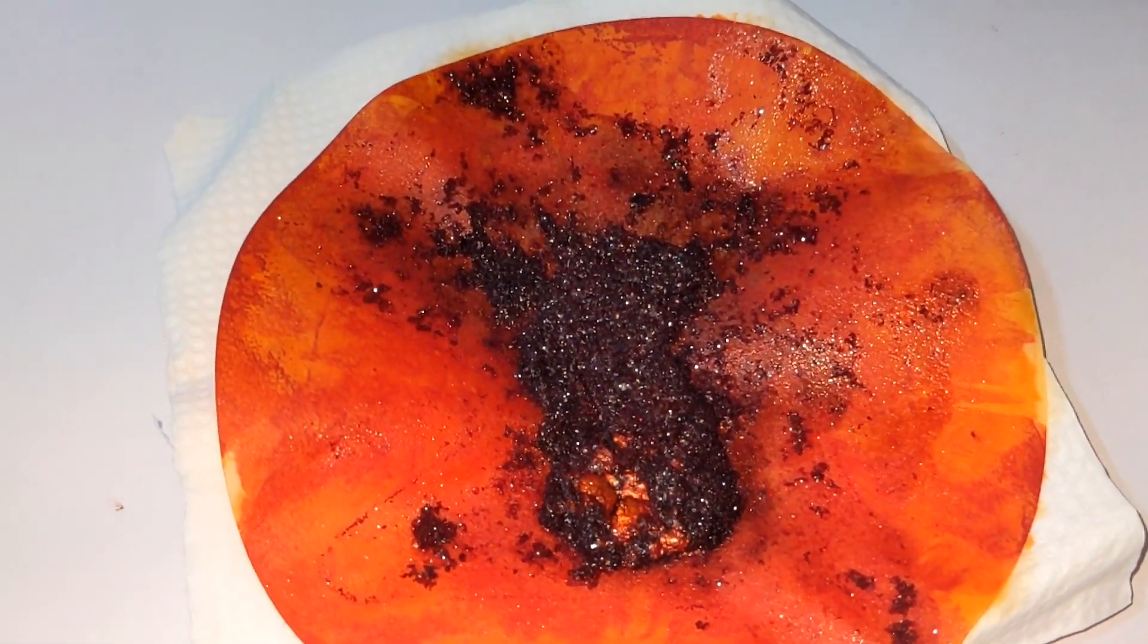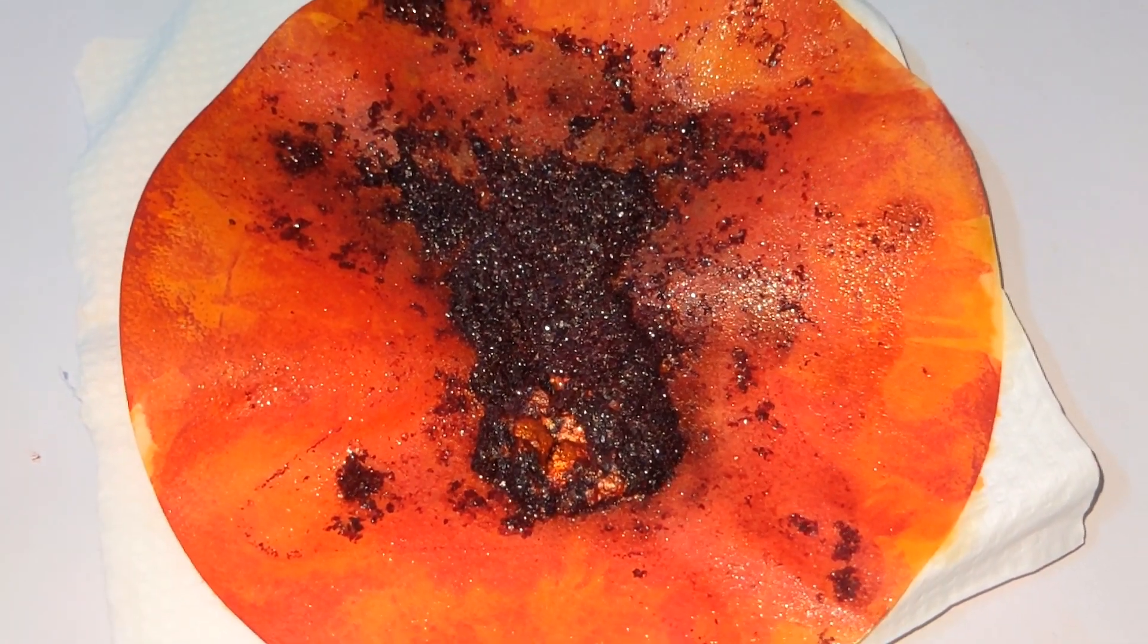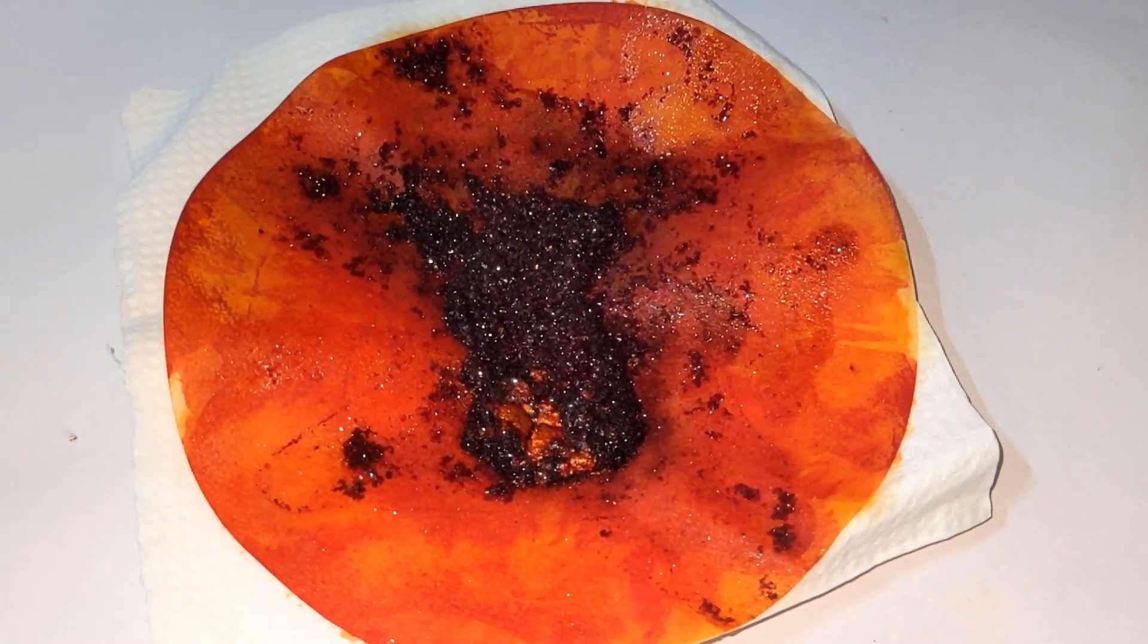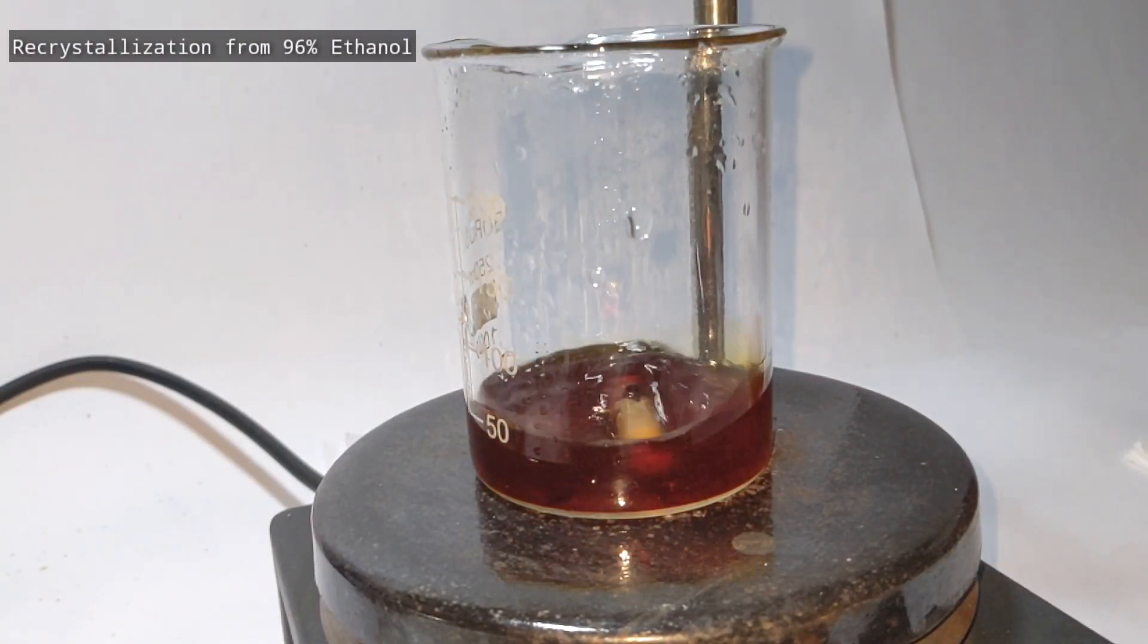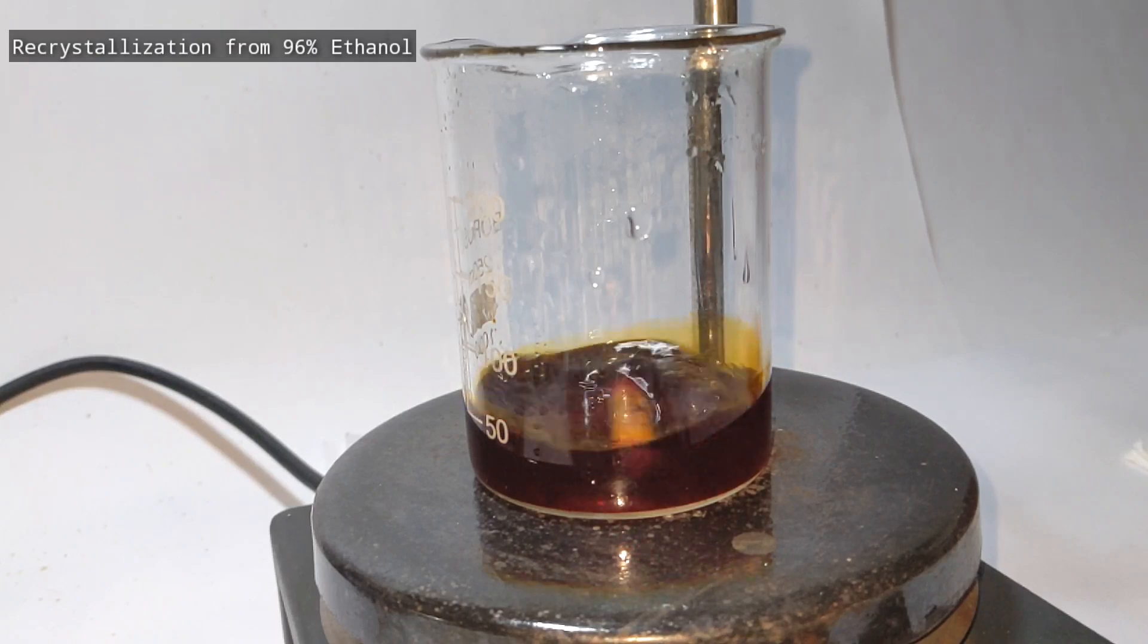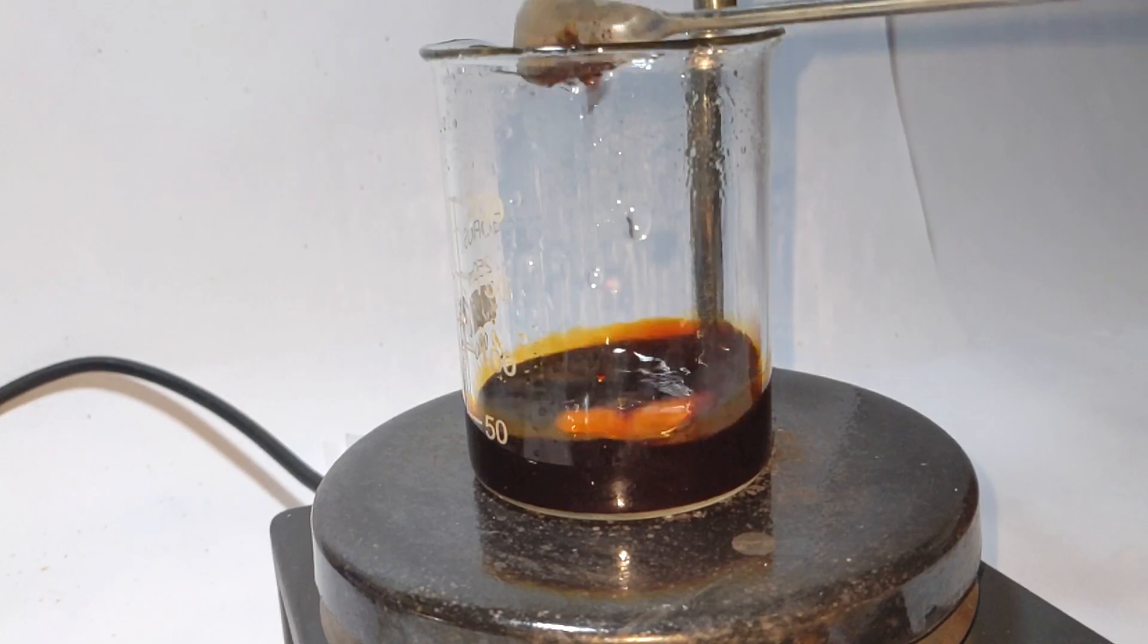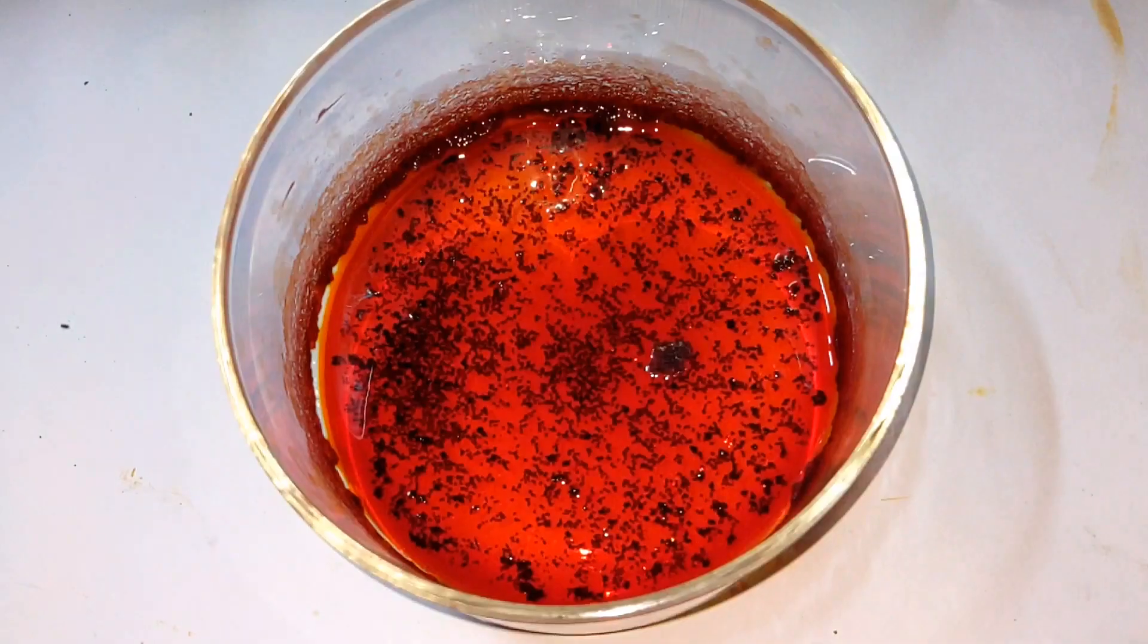These are the crude crystals obtained after filtration. It has a deep red color. Now some amount of the crude product was recrystallized using 96 percent ethyl alcohol. Here we have everything dissolved.